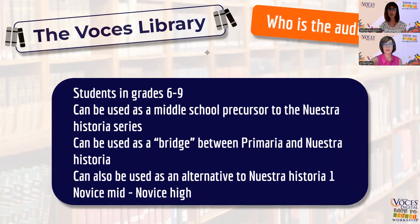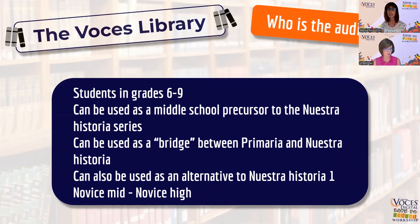The audience is pretty wide — students from grade six to nine. You can use it as a middle school precursor if your high school already has Nuestra Historia and you want to ease students into that, presenting the concept of CI. If you're already using Primaria and Nuestra Historia in the high school, you can bridge that with Puentes — hence the name. You can also use it as an alternative if students are getting credit for Spanish I, and they'd be able to go into level two after a year in Puentes. This works students through Novice Mid and Novice High proficiency.